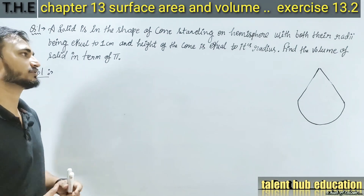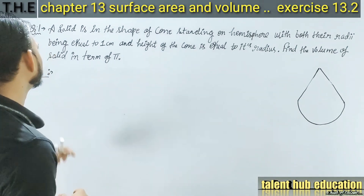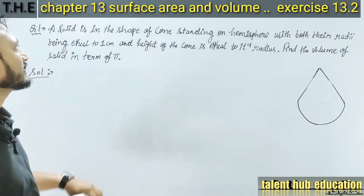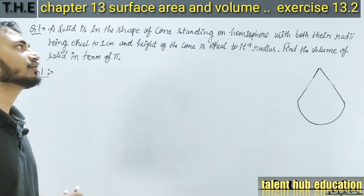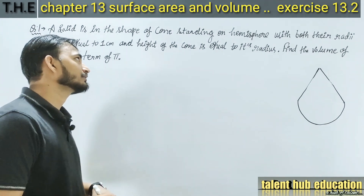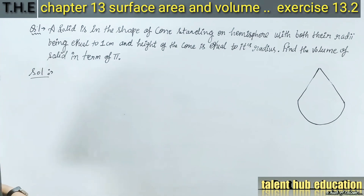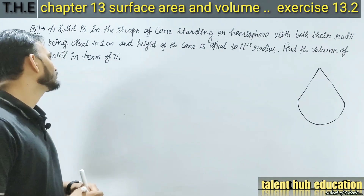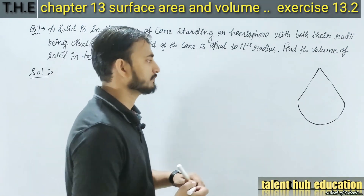What is the first question of 13.2? A solid is in the shape of a cone standing on a hemisphere, with both radii being equal to 1 cm and the height of the cone equal to its radius. Find the volume of the solid in terms of pi.